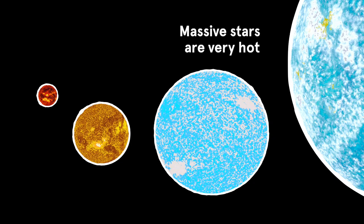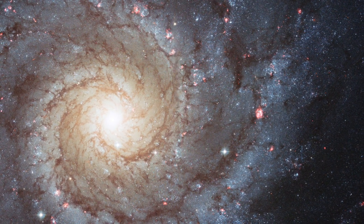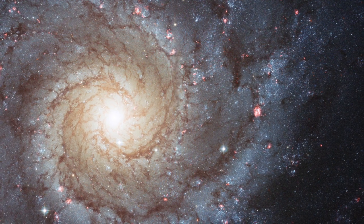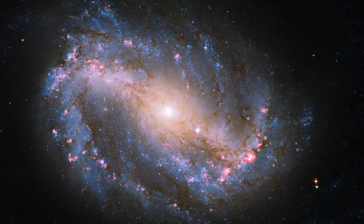Massive stars are very hot and are blue-white in color, but these stars burn their fuel very quickly and die after only a few million years. Low-mass stars, which are very long-lived, are cooler and much redder. Therefore, blue spiral galaxies contain many recently-born, hot, massive stars and are actively forming new stars.